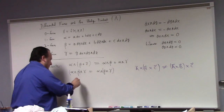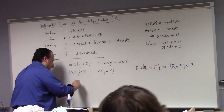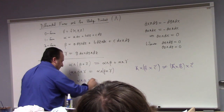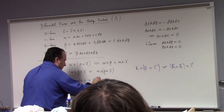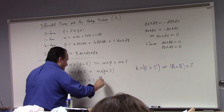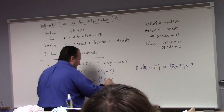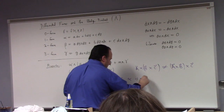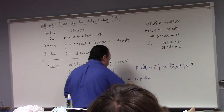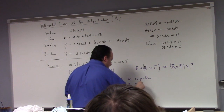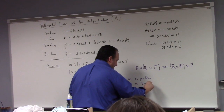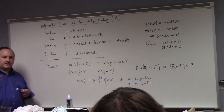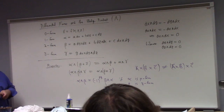One thing the wedge product does that's really different is it satisfies this rule: alpha wedge beta equals (minus one) to the PQ times beta wedge alpha, if alpha is a P-form and beta is a Q-form. That's a quick overview of the structure of the wedge product.